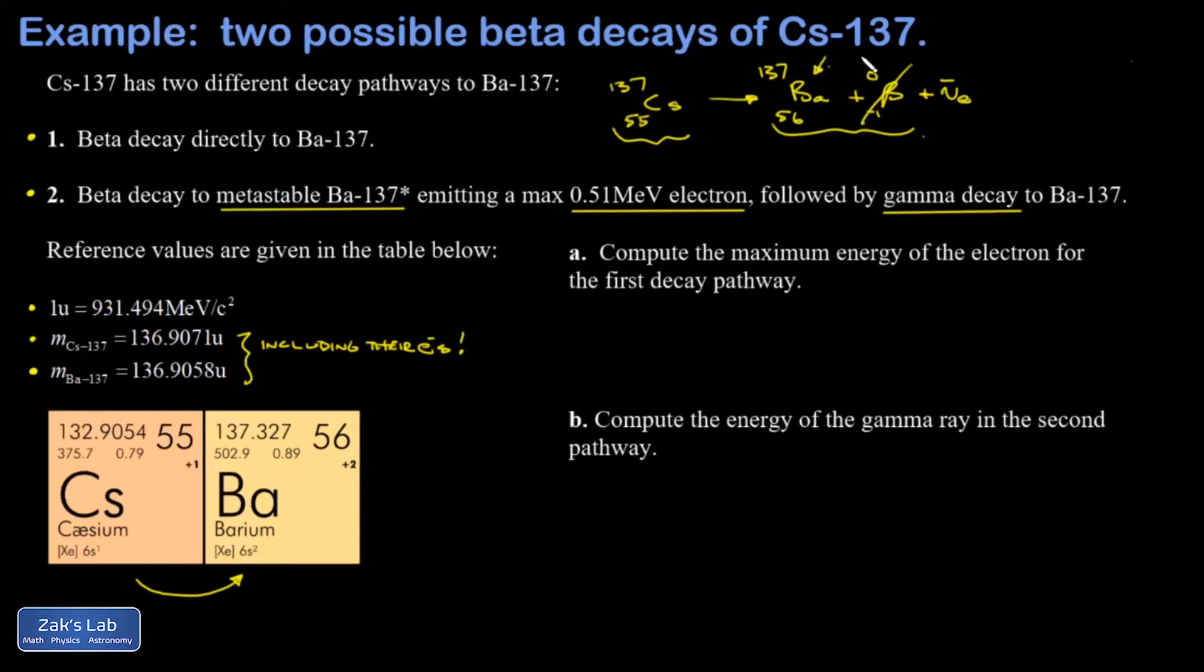Again, I don't care about the neutrino because it's approximately massless. So then I'm asked to get the maximum energy for the electron in the first decay pathway. This brings up another subtle issue about beta decay: the amount of energy the electron runs away with is variable—it depends on the angle between the emitted electron and the emitted electron antineutrino. But the maximum energy of the electron is when the electron runs off with all the energy released in the reaction. So that's all we have to compute.